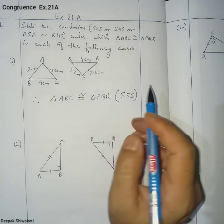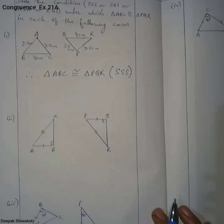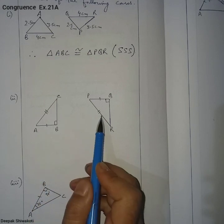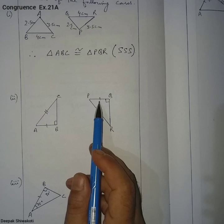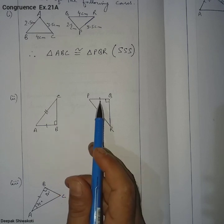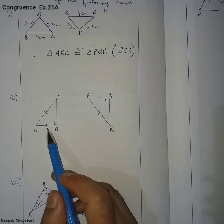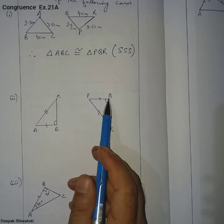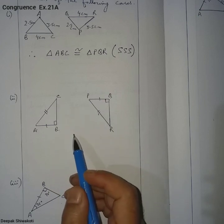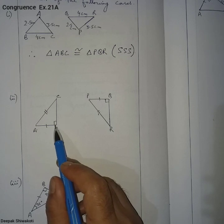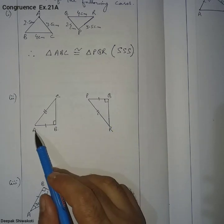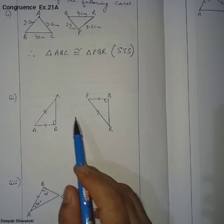Now the next figure, case number two. Here the double-line marks indicate AB equals PQ, and the single-line marks indicate AC equals PR. The symbol shown represents 90 degrees — both triangles have a right angle marked.